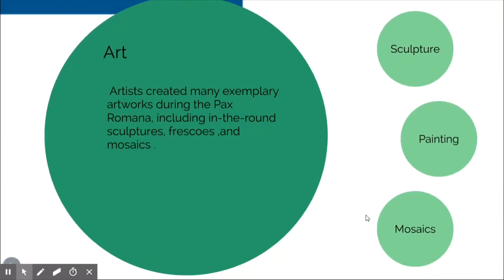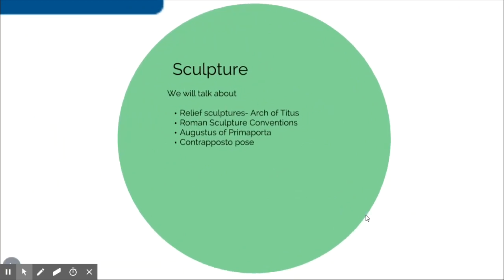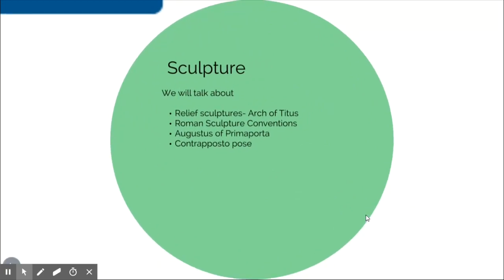The art the Romans created breaks down into sculpture, painting, and mosaics. They created a lot of great art during the Pax Romana — if you're not fighting all the time, you have time to create cool art. For sculpture, we'll talk about relief sculptures in the Arch of Titus, the general rules of how Roman sculptures were created, and specifically the Augustus of Prima Porta — the statue of Augustus. We'll also revisit the contrapposto pose, that bent-leg pose first discussed with ancient Greece.